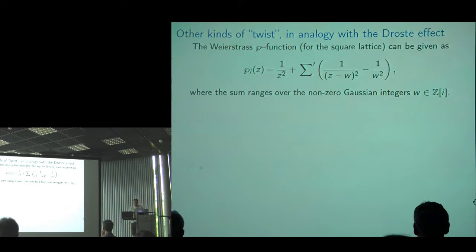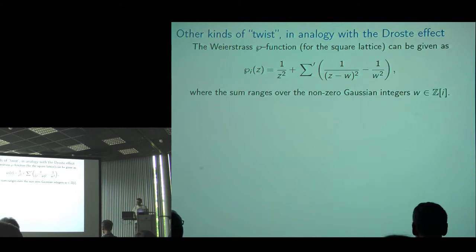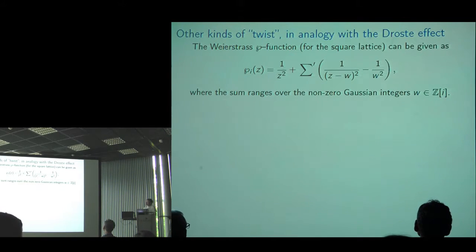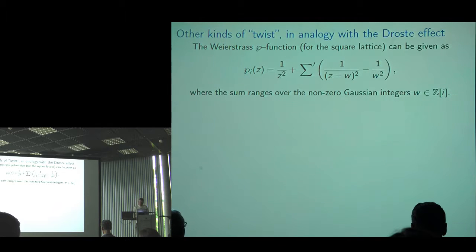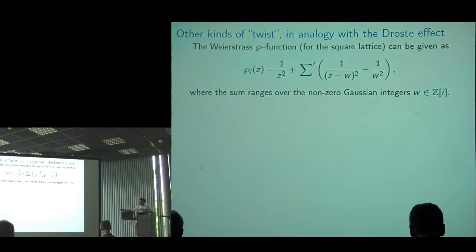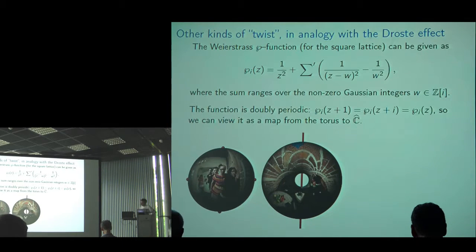This half of the talk is joint work with Saul Schleimer, a collaborator at the University of Warwick. There's the Weierstrass P-function — one version for a square lattice. You add up infinitely many terms of this kind, with Gaussian integers w (excluding zero). It turns out this function is doubly periodic: adding 1 or adding i to a complex number gives the same value. Unlike log or exp, which repeat in one direction, here the image repeats in both horizontal and vertical directions — it tiles the torus.